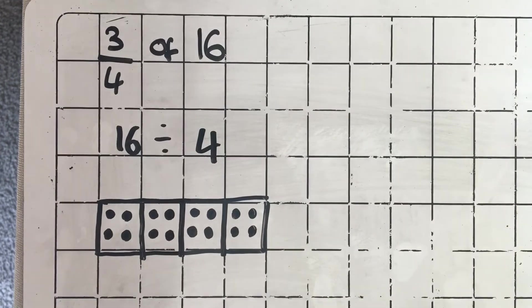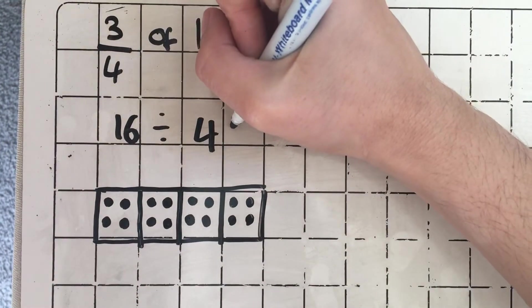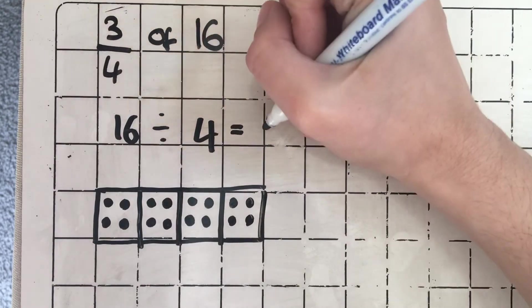So I can see that there are 4 dots in each of my 4 parts. So that means that 16 divided by 4 equals 4.